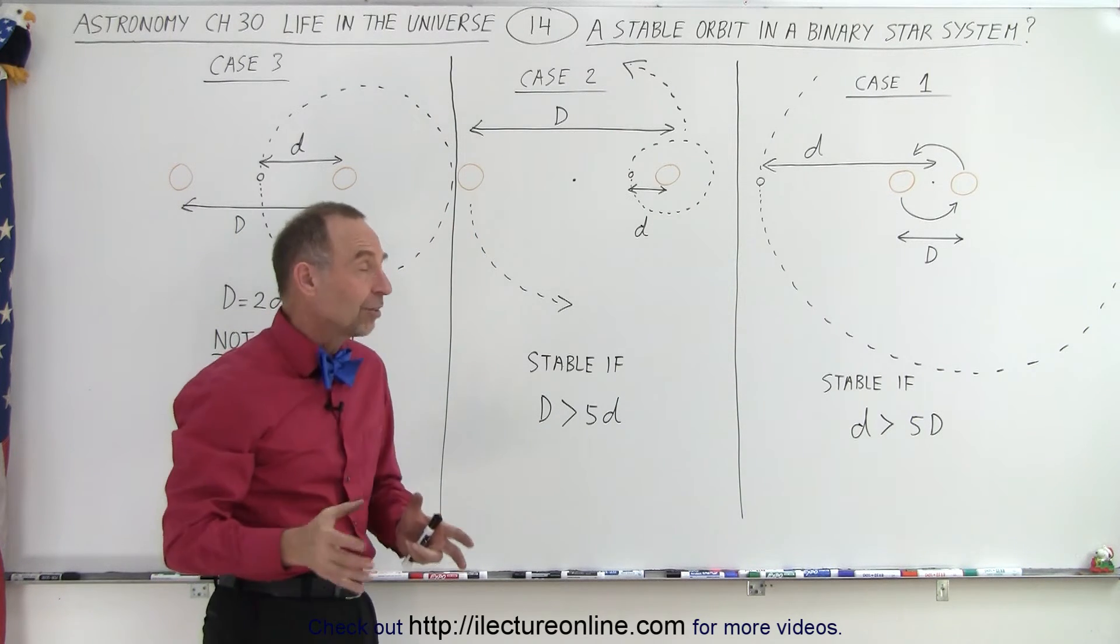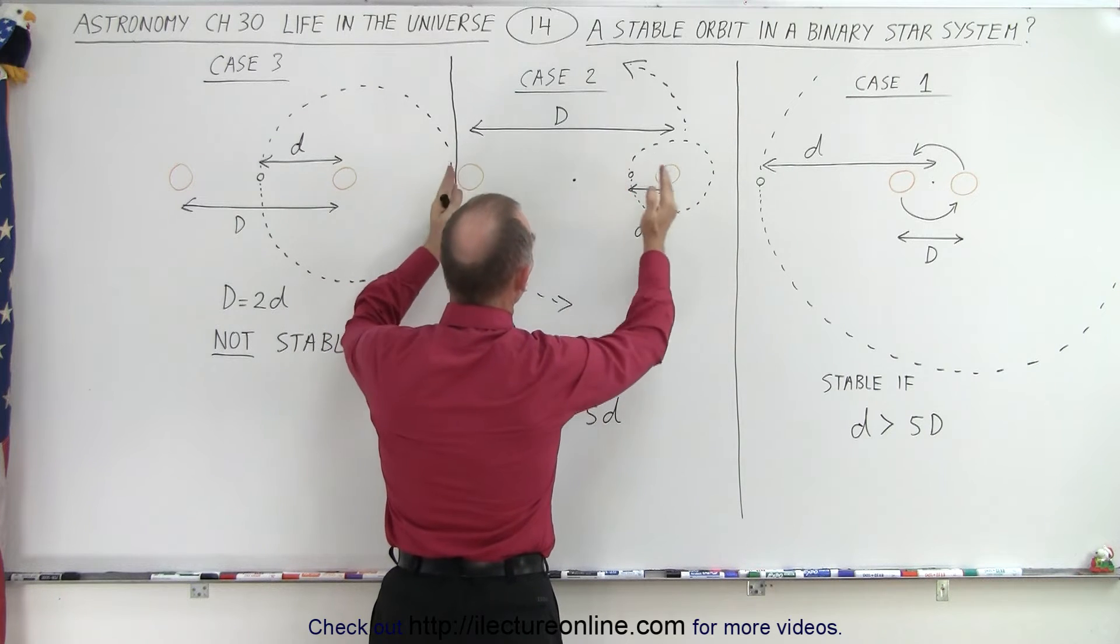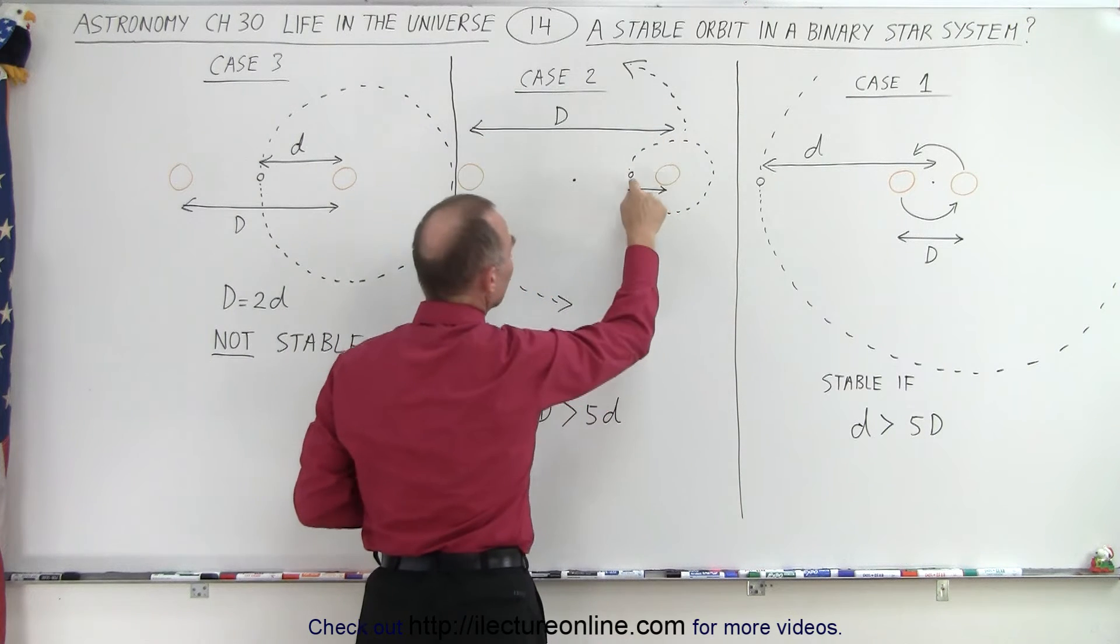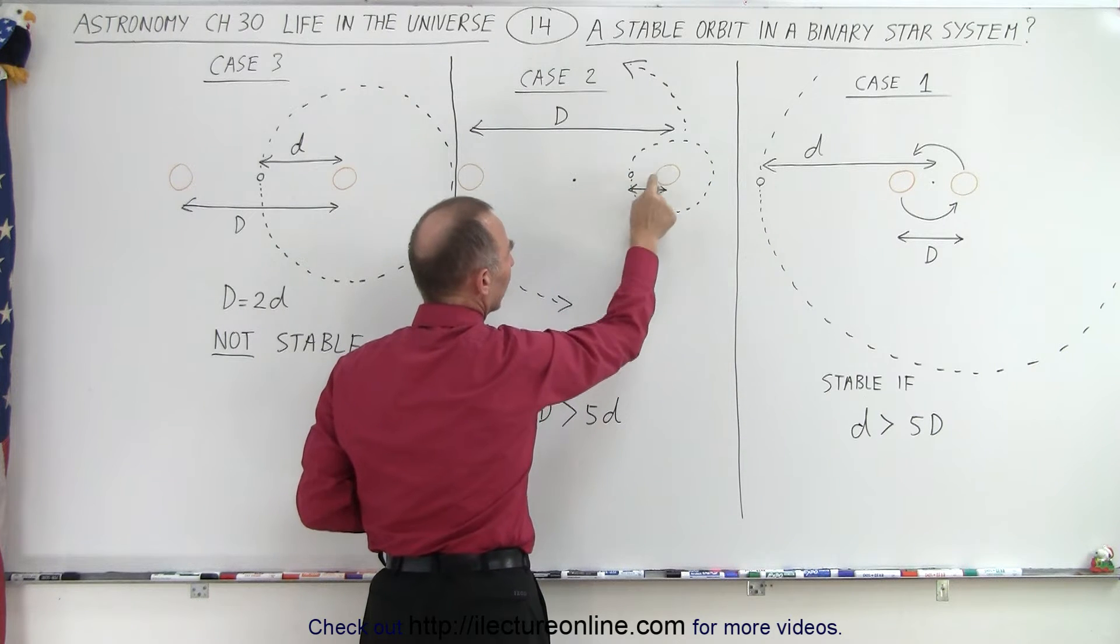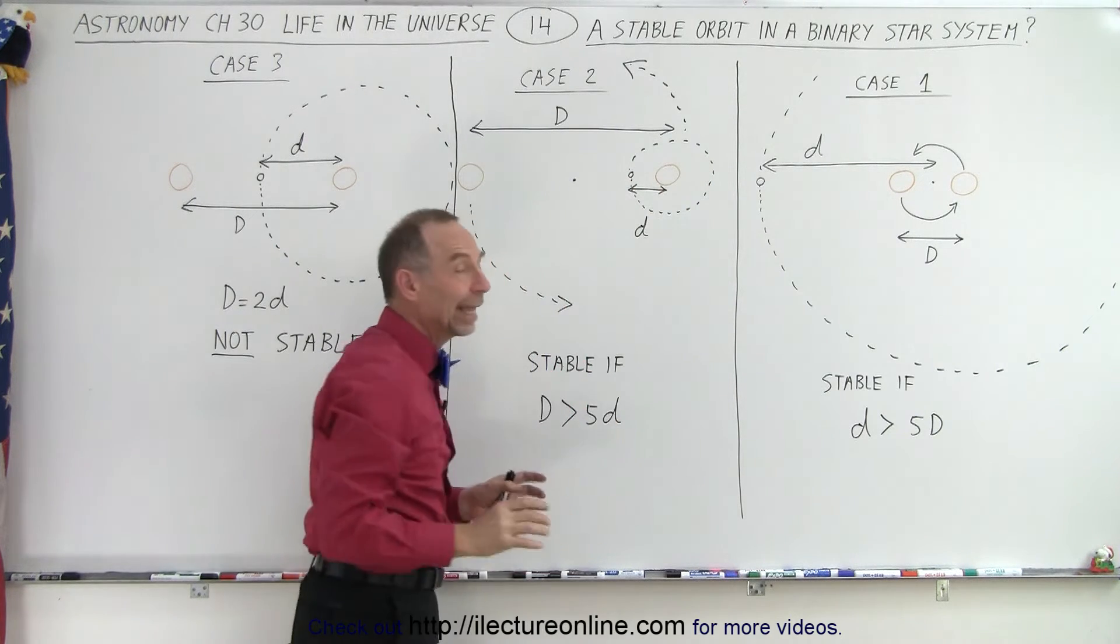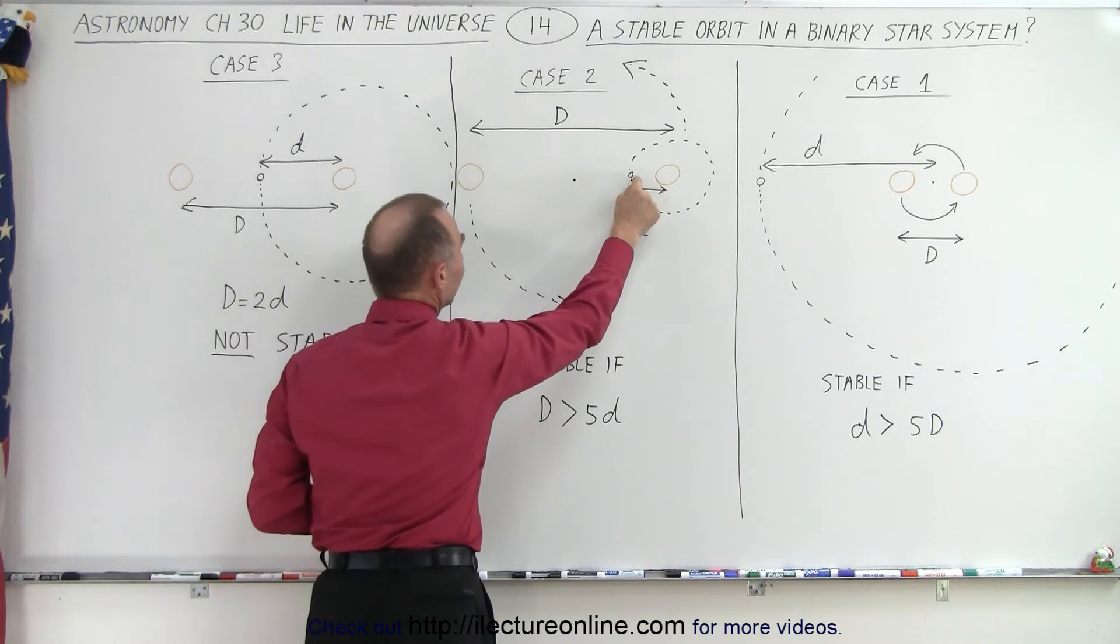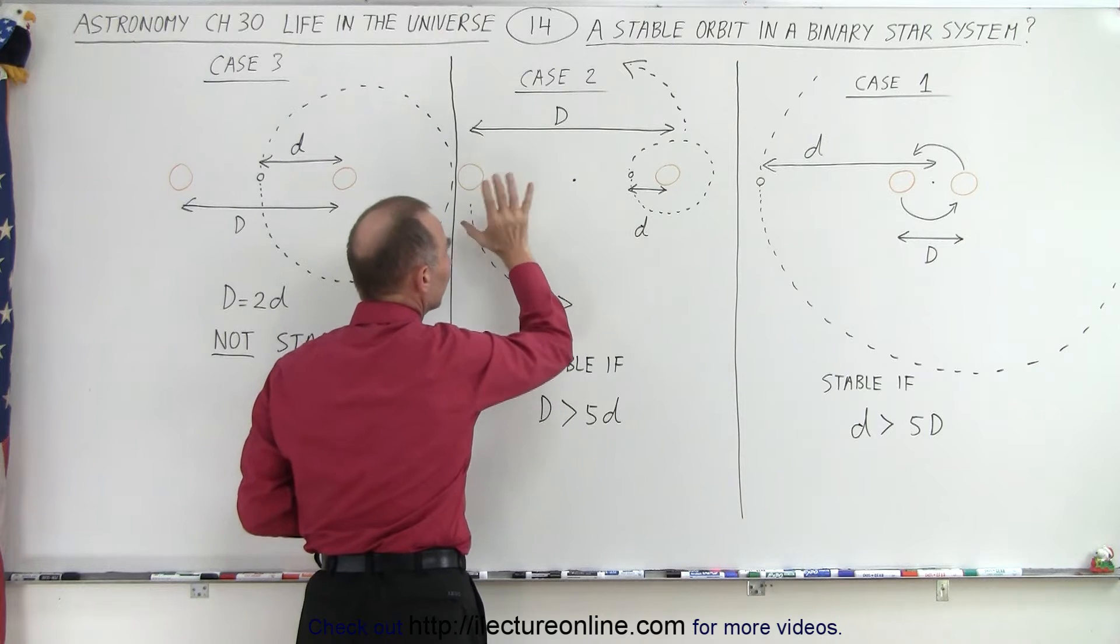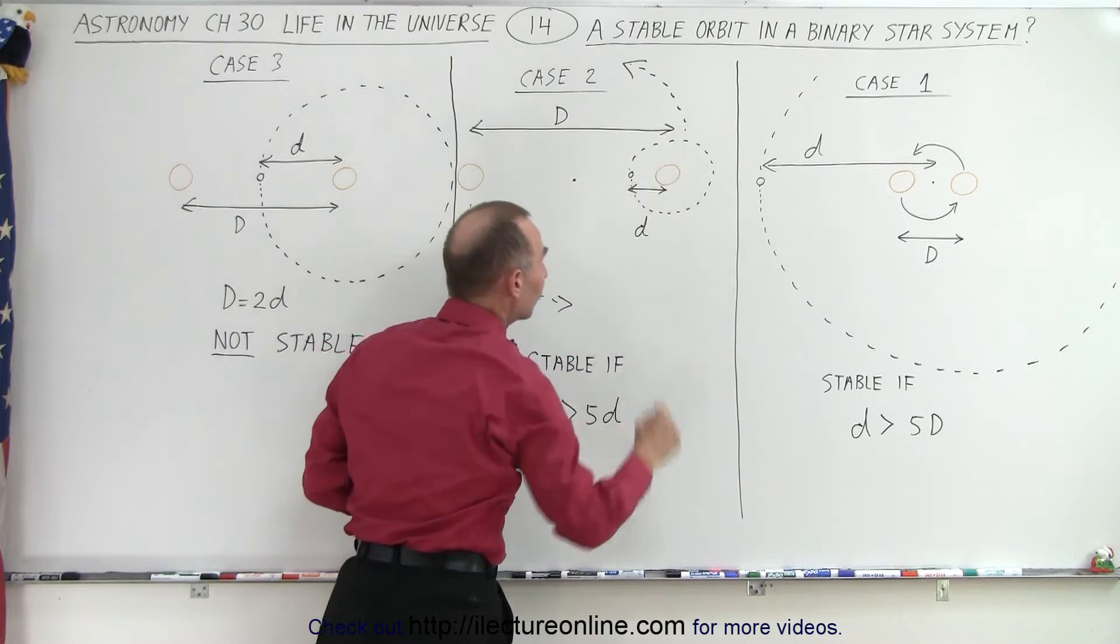A second possibility would be that the two stars are very far apart from one another. And so again, the distance between them is big D. And then you have a planet that is close to one of the two stars and the distance from the planet to that star is little d. And again, if the second star is far enough away so that the gravitational force between this planet and this star is not as strong,